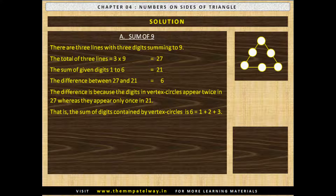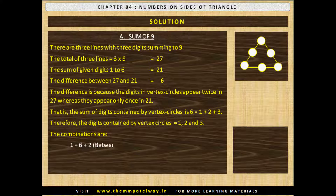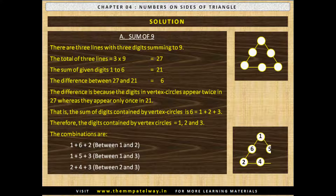This is the only possibility. Therefore, the digits contained by vertex circles are 1, 2 and 3. The combinations are: 1+6+2 between 1 and 2, 1+5+3 between 1 and 3, and 2+4+3 between 2 and 3. You can see the assignment of digits in the circles.